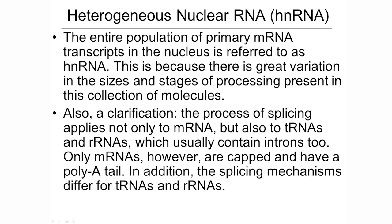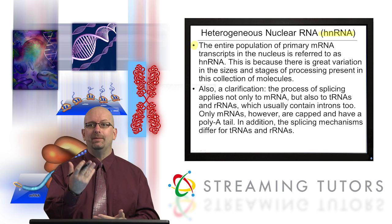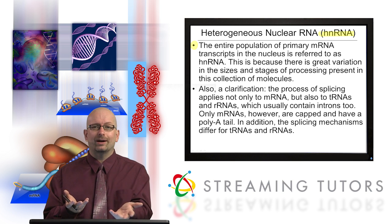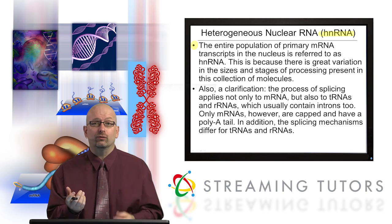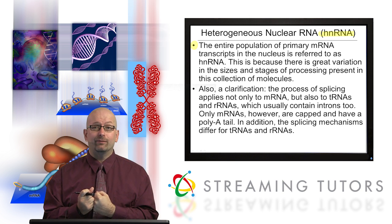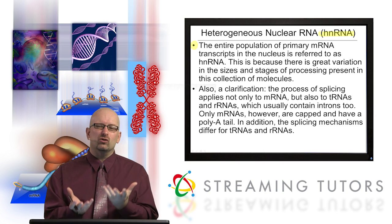A couple of other things to mention in this context: the term heterogeneous nuclear RNA, or hnRNA. The entire population of primary mRNA transcripts in the nucleus is referred to as hnRNA. The reason is because there's all this variation in sizes and stage of processing going on — this is ongoing all the time. Maybe one gene was transcribed five minutes ago and another ten minutes ago; one might be almost done being processed, one might be in early stages. That's why it's heterogeneous.